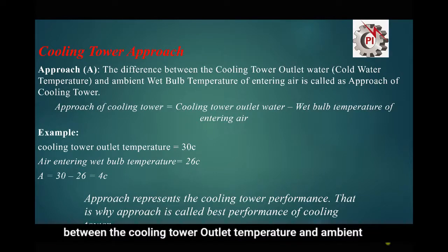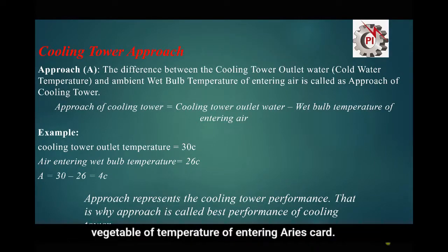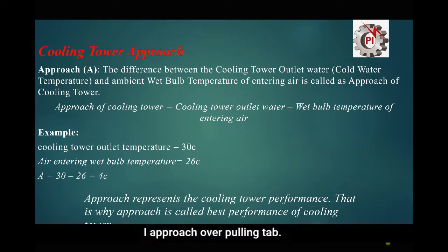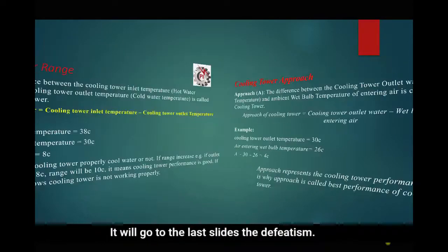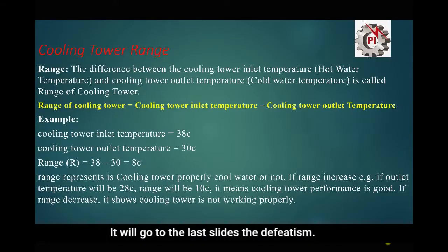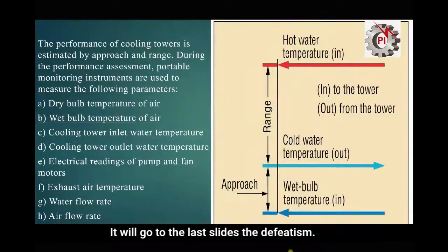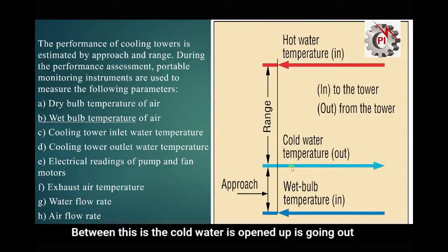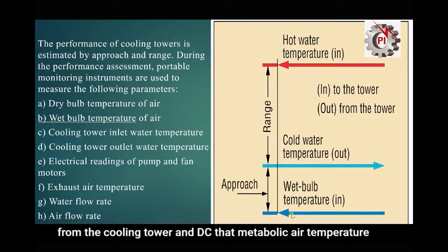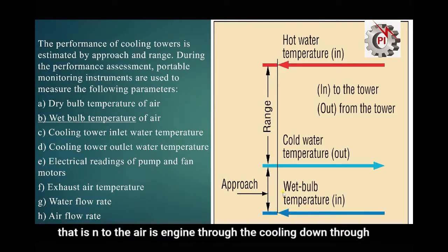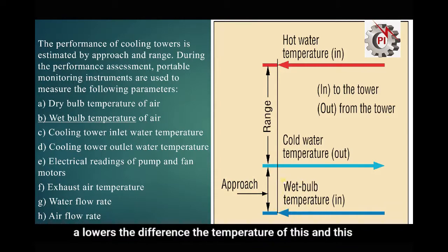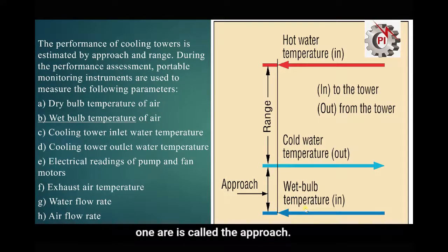The difference between the cooling tower outlet temperature and the ambient wet bulb temperature of the entering air is called the approach of a cooling tower. As shown in the diagram, the cold water outlet leaves the cooling tower and the wet bulb temperature of the air entering the cooling tower through the louvers — the difference between these two temperatures is called the approach.